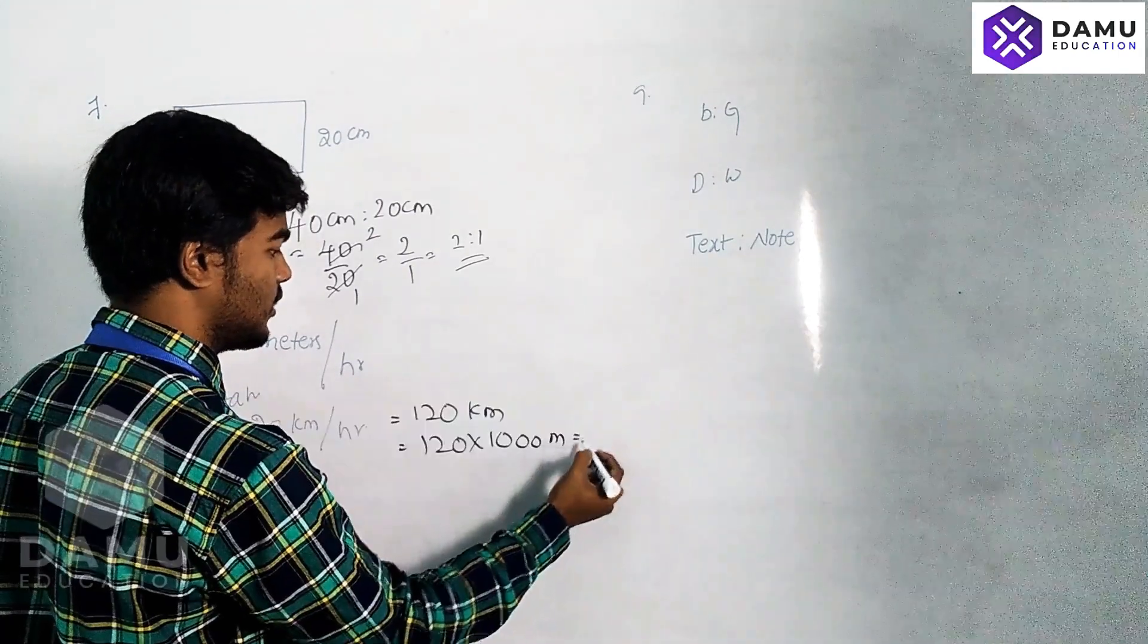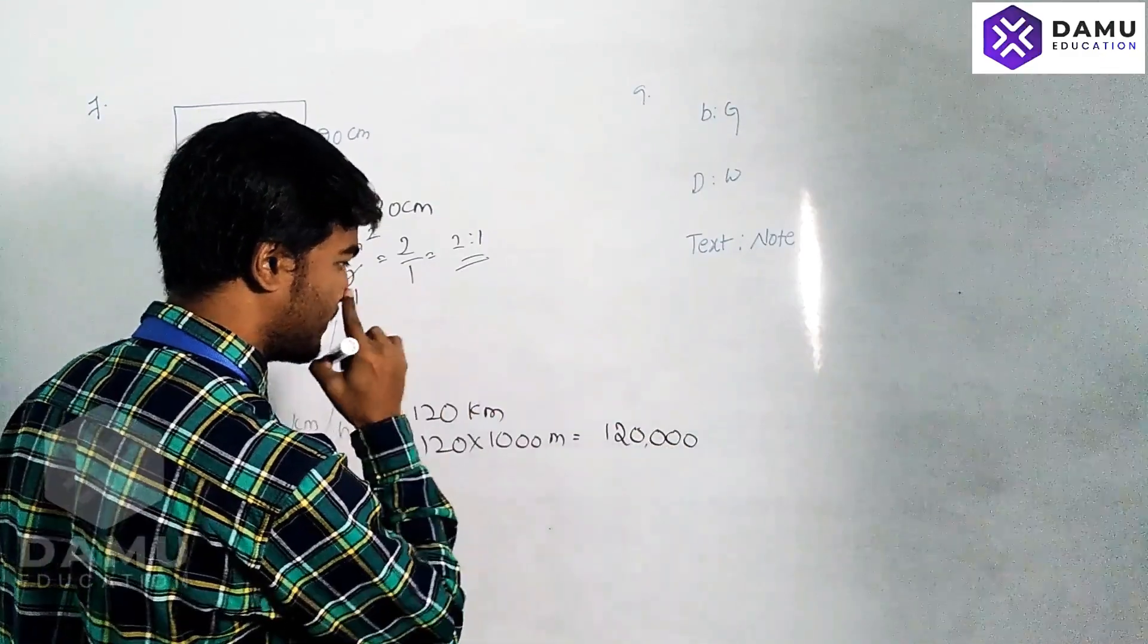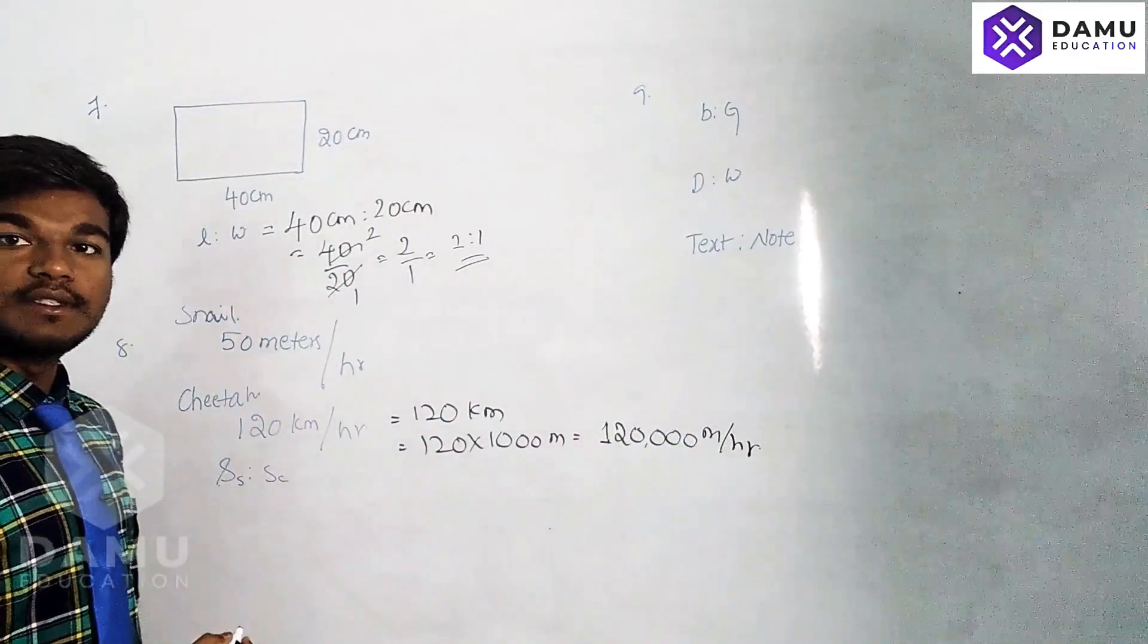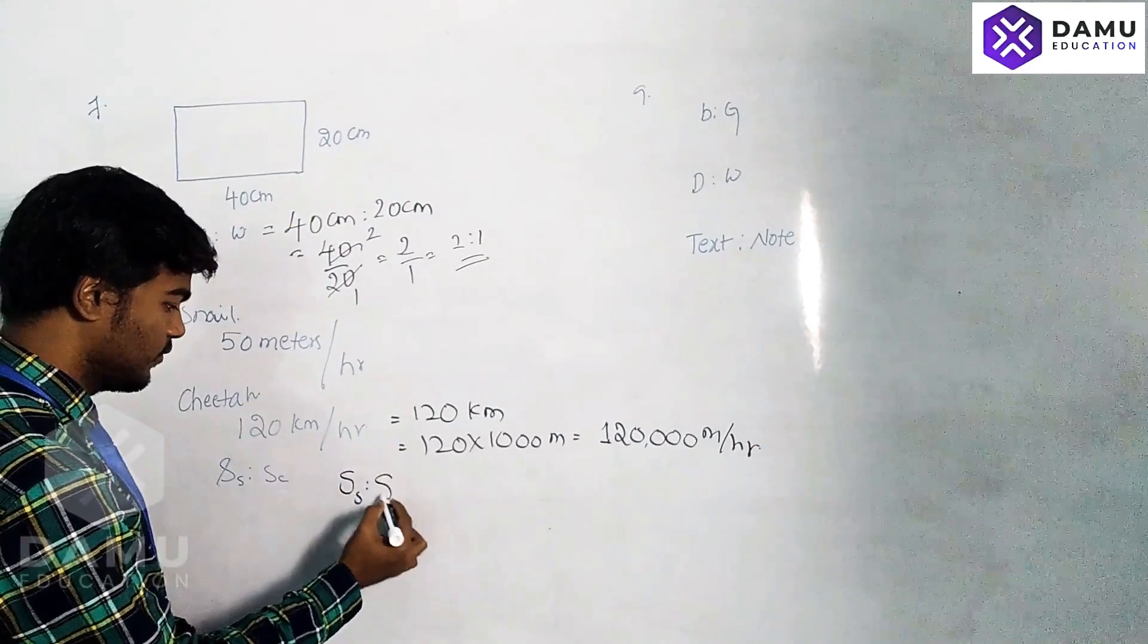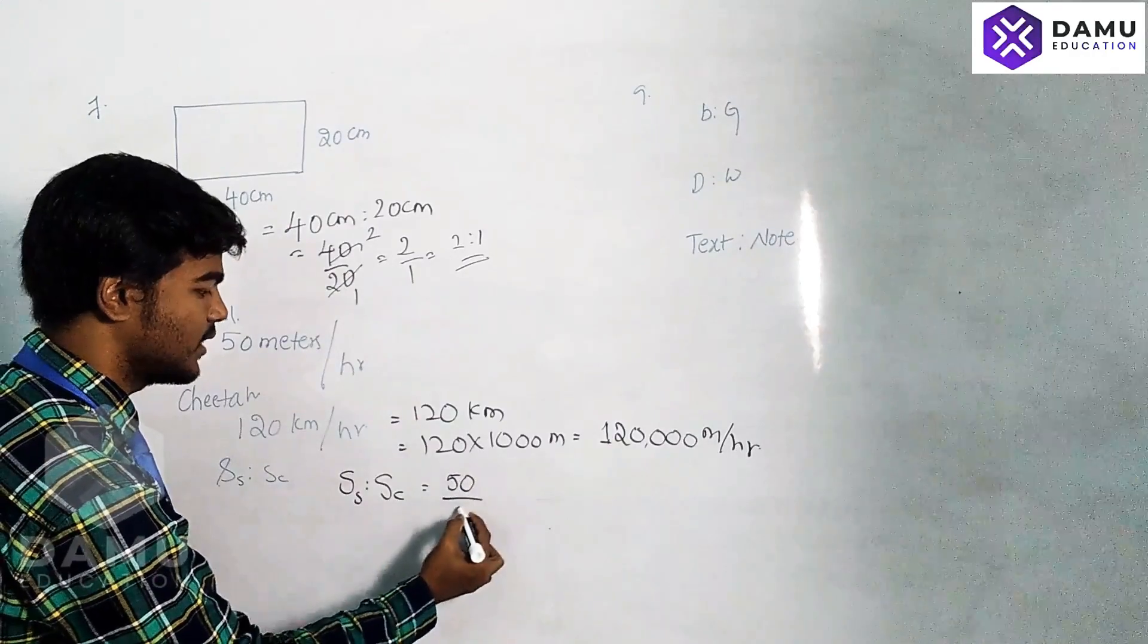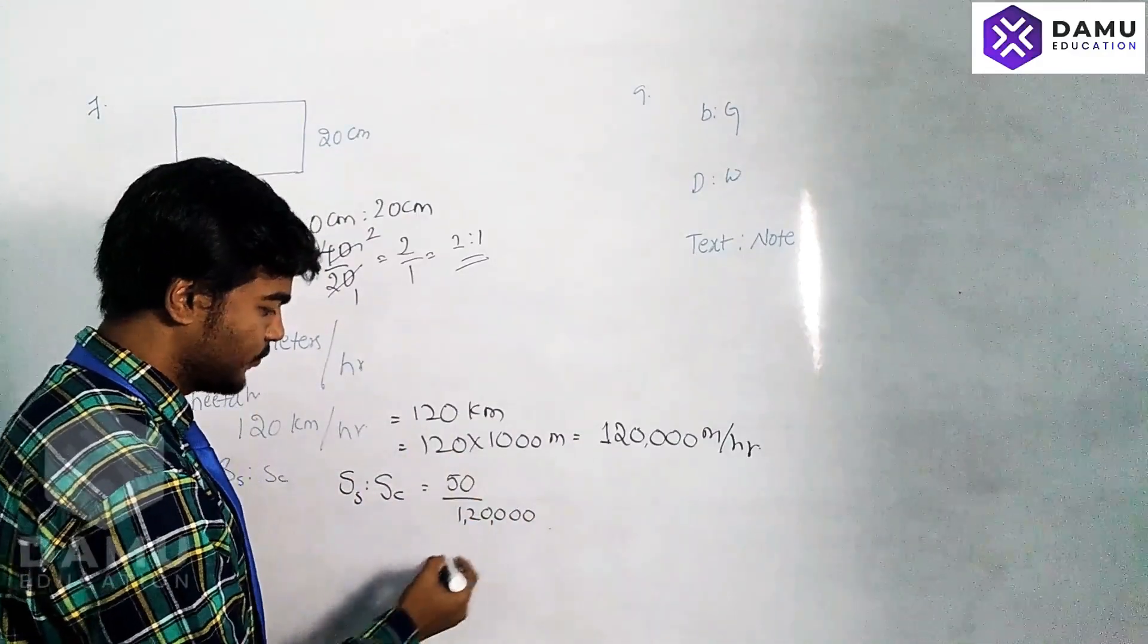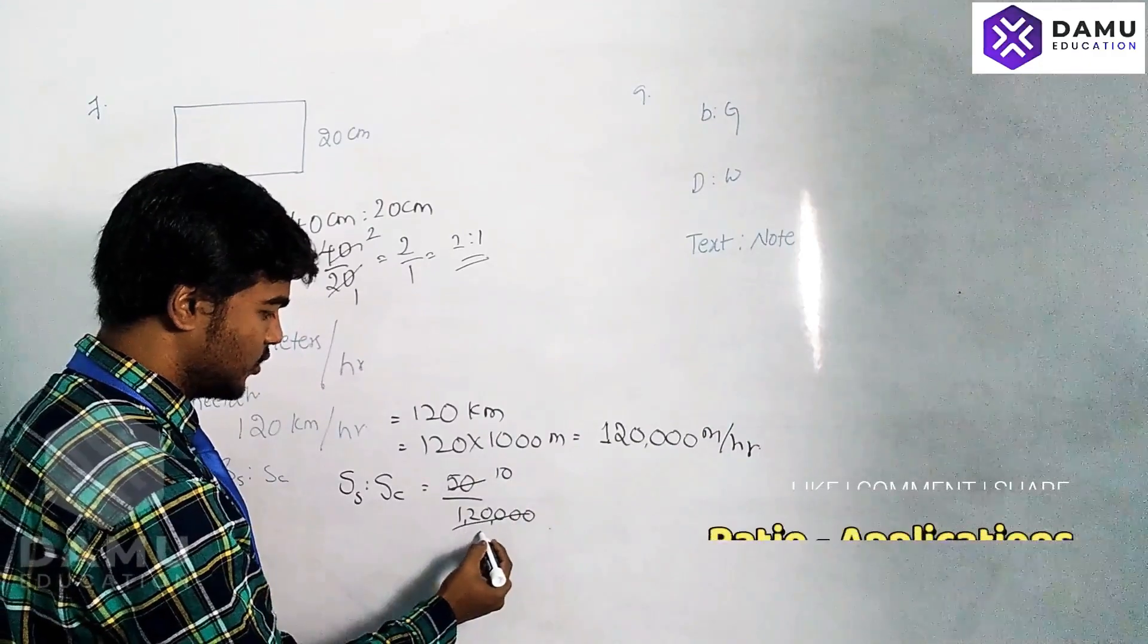The ratio of the speeds will be speed of snail to speed of cheetah. The speed of snail will be 50 meters per hour by 120,000 meters per hour. Meters per hour cancels. Then it will be 5 by 12,000.